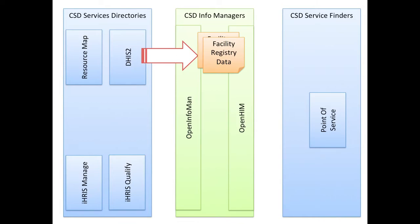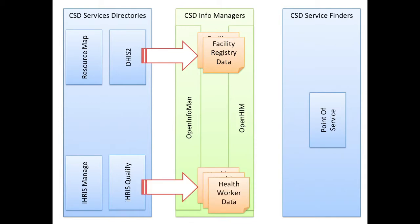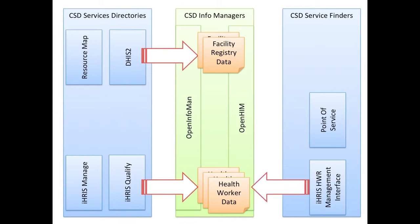The facility data that we're getting from ResourceMap, or DHIS2, or other similar system, gets sent into the InfoManager as a document, a CSD document. At the same time, health worker data from a system such as IRIS gets sent into the InfoManager as CSD documents, which are cached. We also have an option for an IRIS health worker registry management interface. This is actually a service finder, but it is allowed to act on any of the CSD data documents coming in from the health worker information systems, the source data systems. This is an optional interface that can be added on.